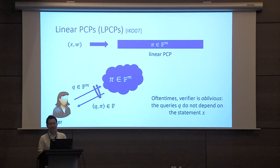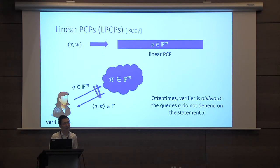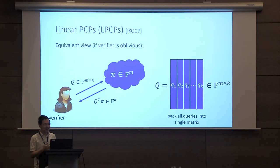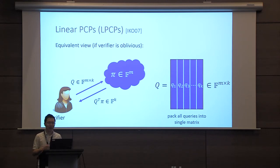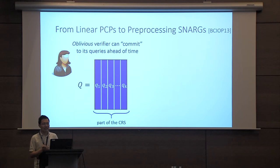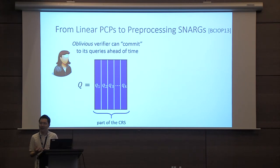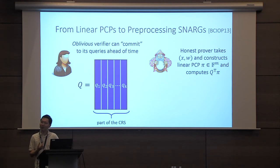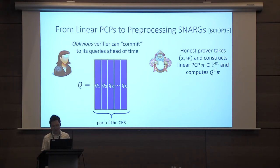Very importantly for our construction, the verifier is actually oblivious — the queries that the verifier submits to the linear PCP oracle do not depend on the statement being proved, nor do they depend on the previous responses. This means we can have an equivalent view where the verifier packs all of its queries together in a single query matrix, where the columns are precisely the queries that would have been submitted to the linear PCP oracle, and the linear PCP oracle computes the matrix-vector product. To go from linear PCPs to preprocessing SNARKs, the key idea is that the oblivious verifier first commits to its queries — since they don't depend on the statement or previous responses — and publishes them as part of the CRS. The honest prover takes its statement and witness, constructs the linear PCP, simulates the operation of the linear PCP oracle by computing the matrix-vector product, and sends it to the verifier.